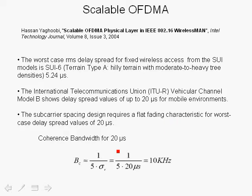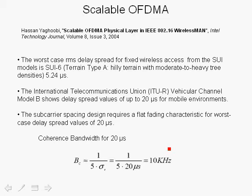Looking at the expression here, the coherence bandwidth for an RMS delay spread of 20 microseconds is equal to 1 over 5 times the RMS delay spread, or 10 kilohertz. This is the typical expression used for coherence bandwidth related to the inverse of the RMS delay spread. In some situations, a factor other than 5 is used.